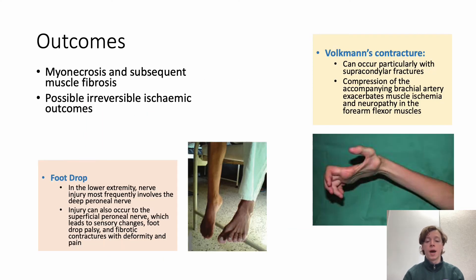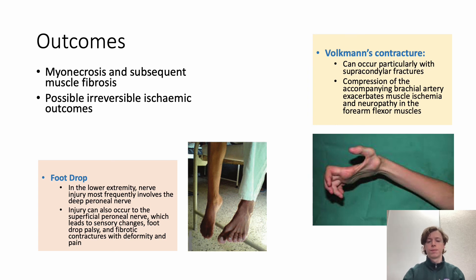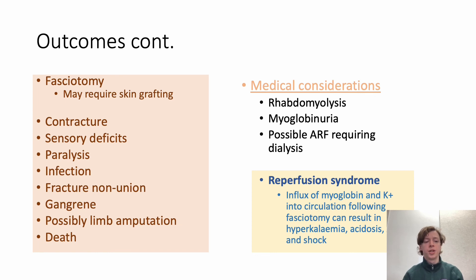Outcomes from acute compartment syndrome include myonecrosis and subsequent muscle fibrosis if left untreated. Two commonly seen irreversible ischaemic outcomes are foot drop — resulting from damage to the deep peroneal nerve with tibial diaphyseal fractures — and Volkmann's contracture, seen with paediatric supracondylar fractures, where compression of the brachial artery causes flexor muscle fibrosis and contracture. Following fasciotomy, further outcomes include skin grafting, permanent contracture, sensory deficits, paralysis, infection, fracture non-union, gangrene, possible limb amputation, and even death.